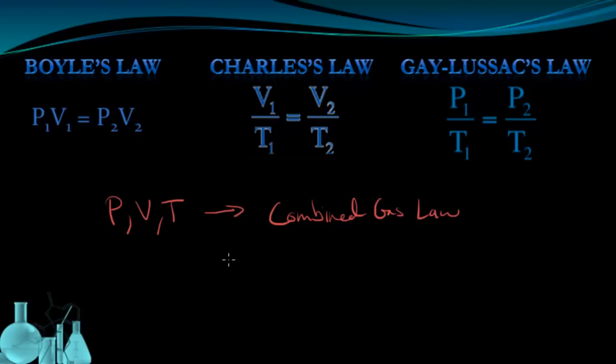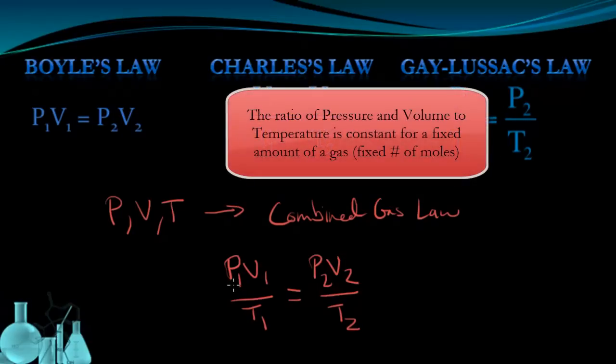And it looks something like this: P1 times V1 over T1, so the initial pressure times the initial volume divided by the initial temperature. The ratio of these three things is equal to P2 times V2 over T2. You should be able to see that this is basically a combination of these three earlier gas laws. It's important to note that the relationship between pressure, volume, and temperature of a gas is a constant ratio for a constant amount of gas. So N, the number of moles of a gas, has to be held constant for this relationship to hold true.